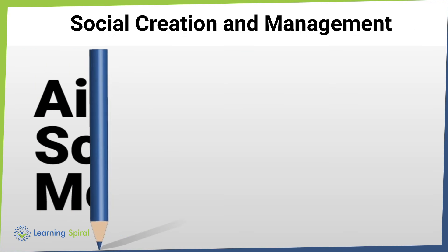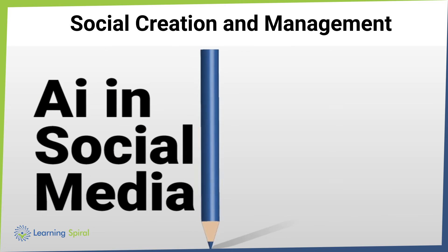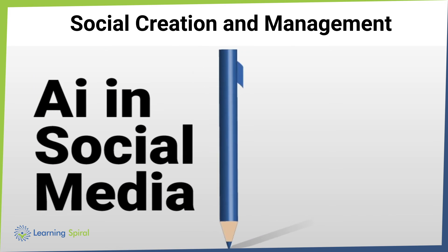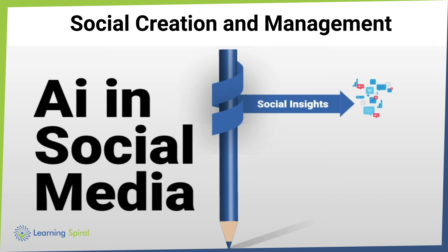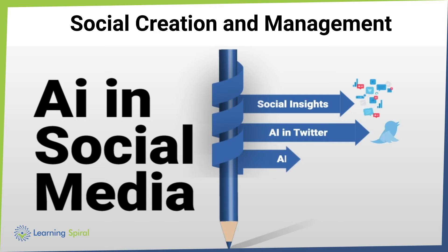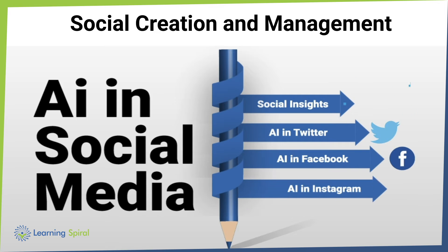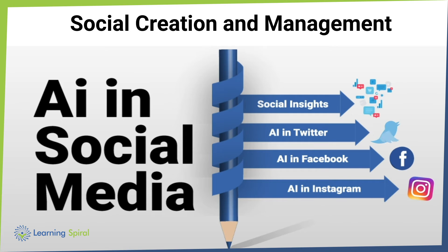Key areas include social creation and management, social insights, and artificial intelligence. This encompasses artificial intelligence in Twitter, artificial intelligence in Facebook, and artificial intelligence in Instagram.